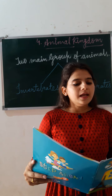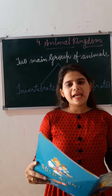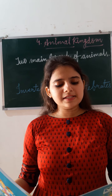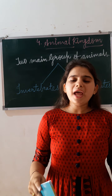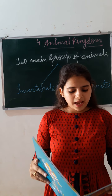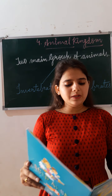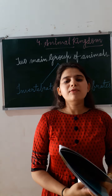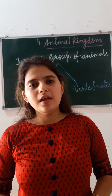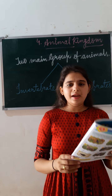Aaj ka jo apna chapter tha — Animal Kingdom and Birds. Animal Kingdom mein two types ke animals maine bata diya — ek baar phir se revise karti hoon. Invertebrates: animals that don't have a backbone, they are called invertebrates. And vertebrates: animals that have a backbone, they are called vertebrates. Examples of invertebrates: sponges, insects, worm, et cetera. And vertebrates: human being, elephant, cow, cheetah.